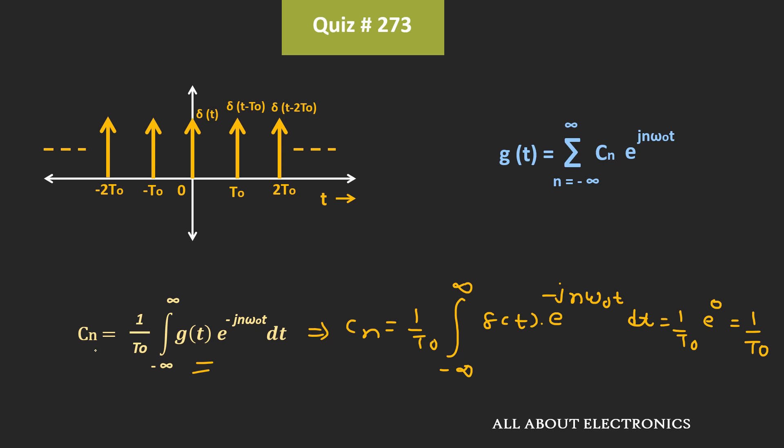So for the different values of n, the coefficients are 1 by t0. That means from this expression, we can say that the signal g equals 1 by t0,